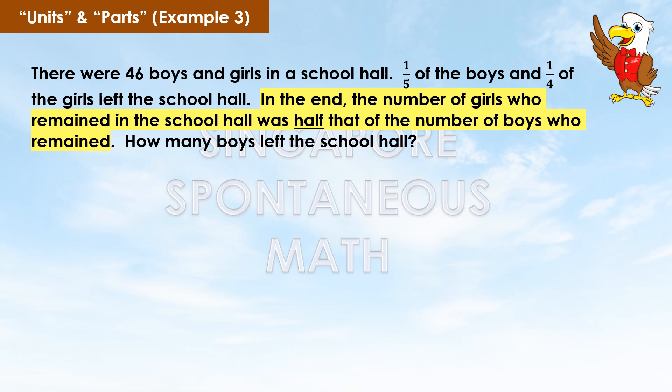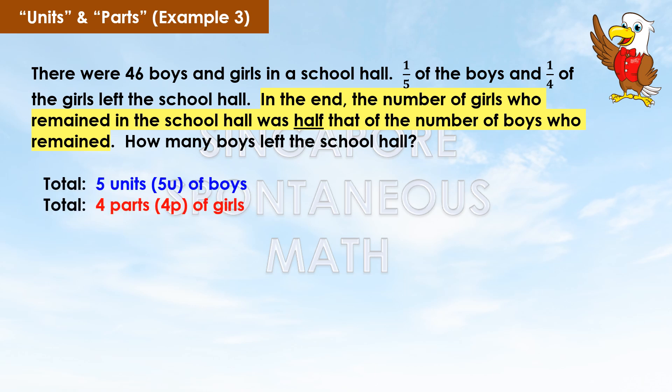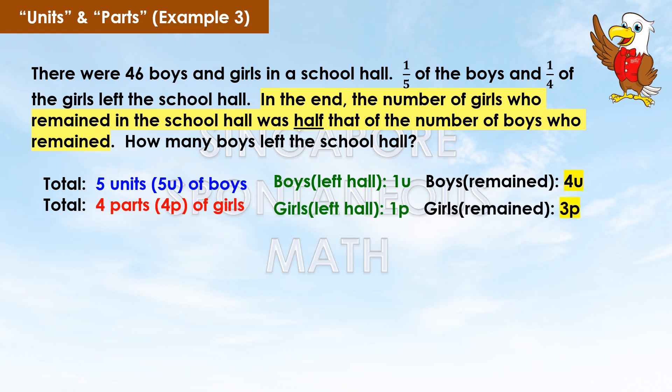We use units to represent the boys and parts to represent the girls. There are 5 units of boys and 4 parts of girls in total. One unit of boys left the hall; hence, 4 units of boys remained. 5u minus 1u equals 4u. One part of girls left the hall; hence, 3 parts of girls remained. 4p minus 1p equals 3p.